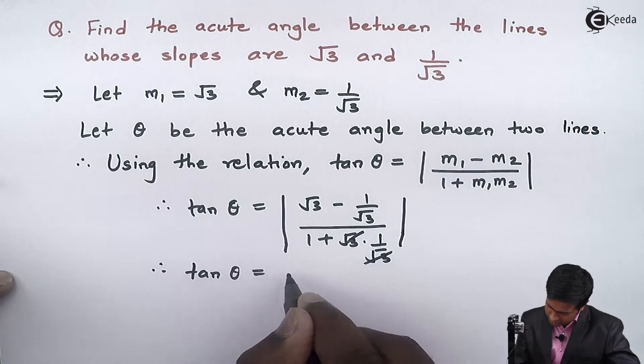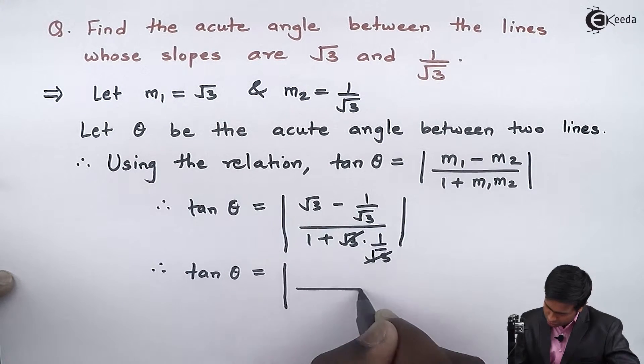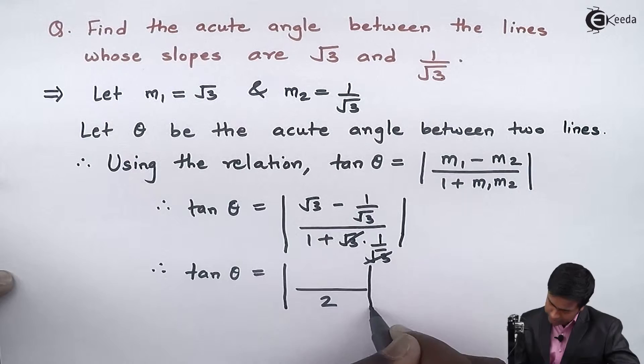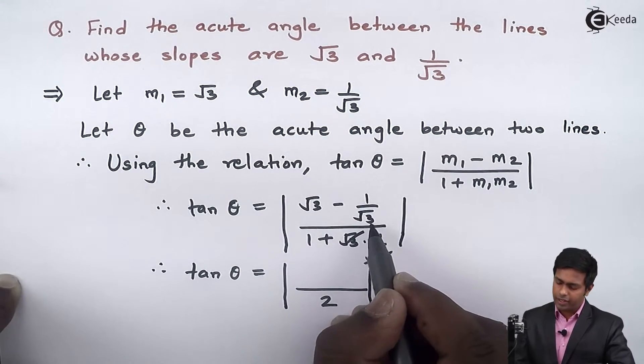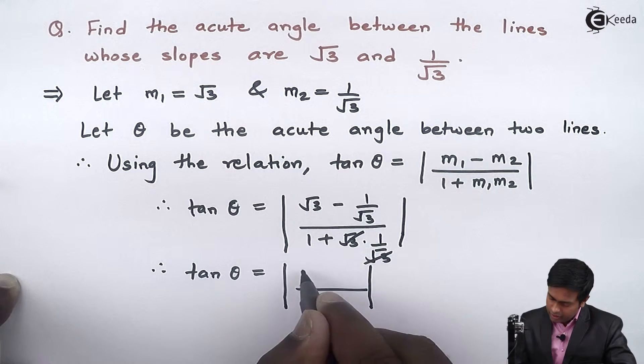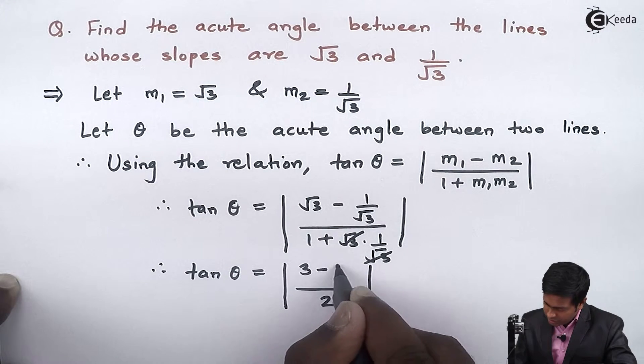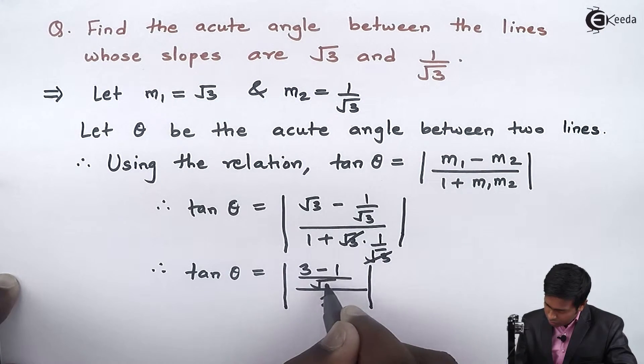In the numerator, we can take the LCM and get √3 × √3 = 3, so we have (3 - 1)/√3.